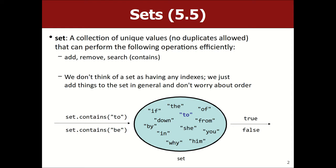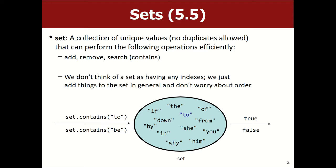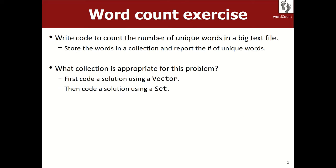We don't care about first element, second element — if you care so much about order, use a vector. You can ask a set if it contains a value, and it does or it doesn't. So, here's an example: write code that counts the number of unique words in a large text file. If you see the word 'hello' twice, count it as one; if you see 'the' 55 times, count it as one word. A set of words would be great for this.